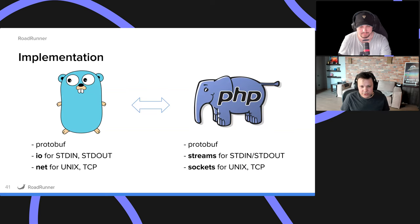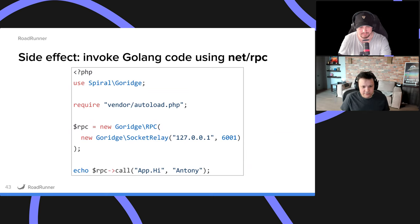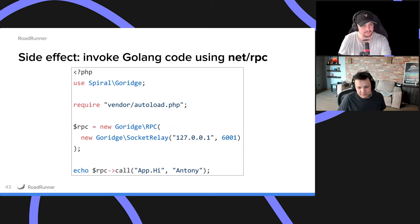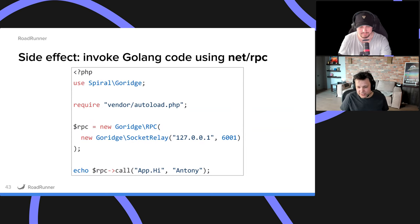Once we implemented GoRidge, we also had a side effect: we implemented the Golang RPC protocol, which allowed us to create Golang functions and invoke them from PHP. This opens a lot of interesting approaches. We've already seen users specifically using this portion of code — for example, probably the largest forum in Belarus uses this approach for parsing BB codes and converting them to HTML. They found that using the native Golang library for BB codes and communicating with it over GoRidge was actually faster than using native PHP extension libraries, with a few times improvement on latency.